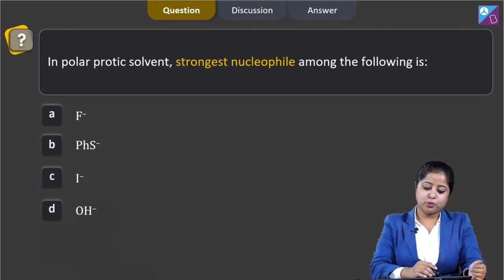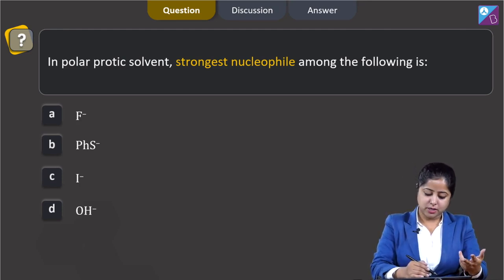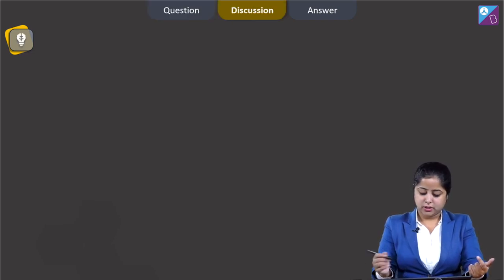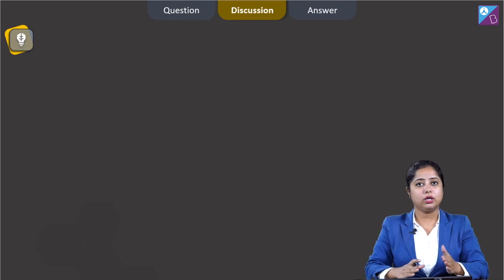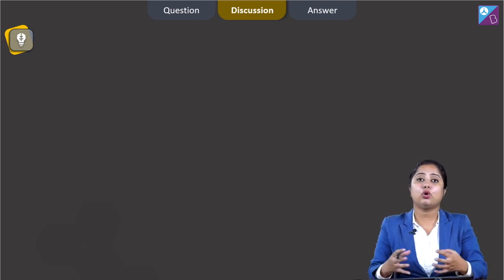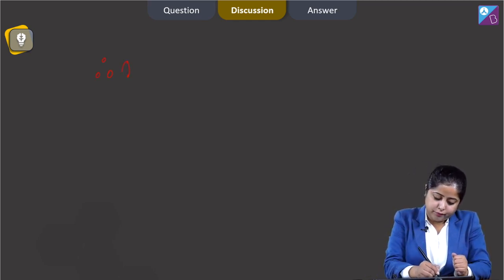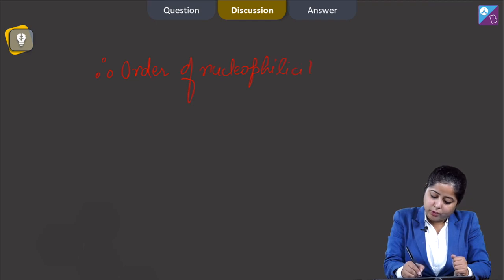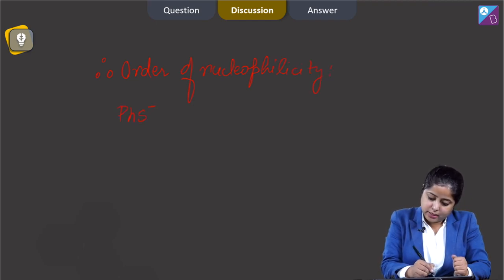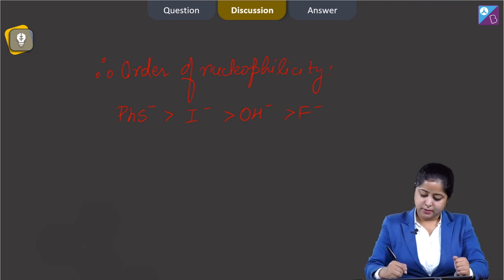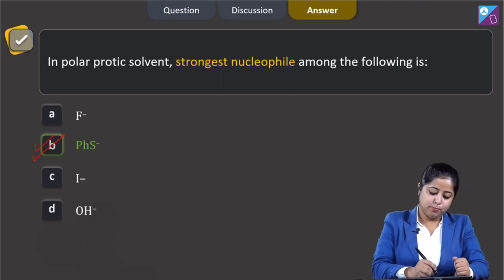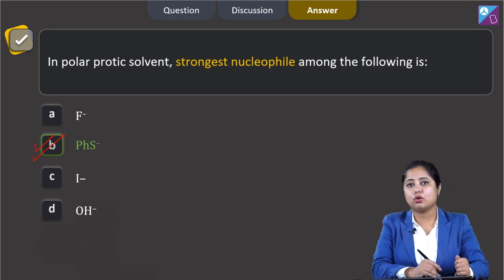Moving to the next question: in a polar protic solvent, the strongest nucleophile among the following — F⁻, PhS⁻, I⁻, or OH⁻. In polar protic solvent, due to hydrogen bonding, OH⁻ and F⁻ are strongly hydrated and their nucleophilicity is decreased. The order of nucleophilicity is: PhS⁻ > I⁻ > OH⁻ > F⁻. So the correct answer is option B — PhS⁻ is the strongest nucleophile.